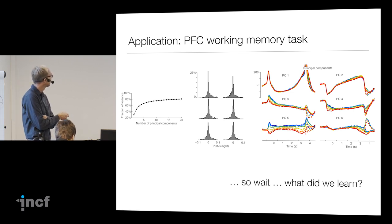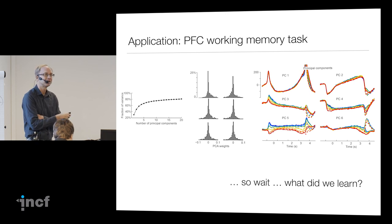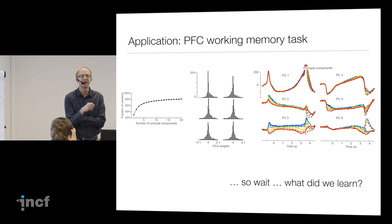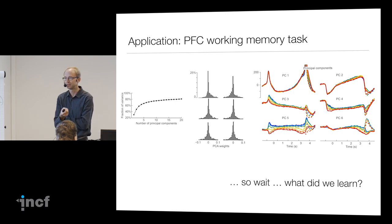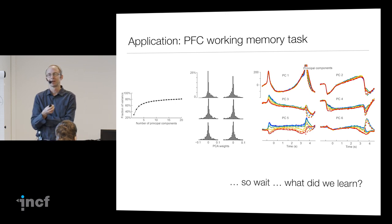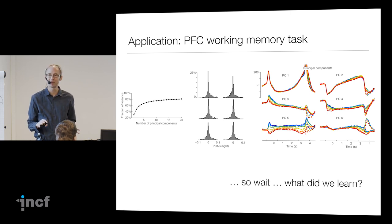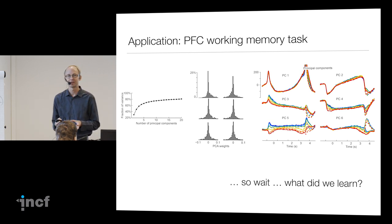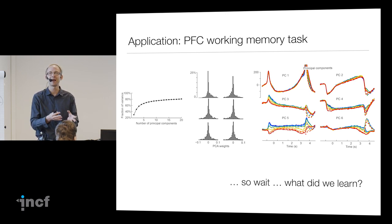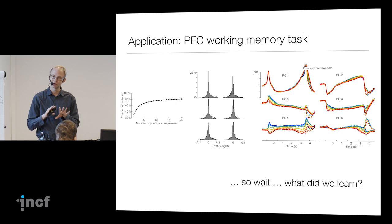What you see here are the weights of the principal components onto the neurons — basically the distribution of coefficients in the eigenvector — and it tells you how these principal components are distributed in the population. One of the interesting things is that essentially every neuron is more or less a random combination of these principal components. Even if you look with clustering methods, you don't really find any kind of different classes of neurons in the prefrontal cortex. There's no class of neurons that cares only about the stimulus frequency or only about the decision. Everything is very distributed.